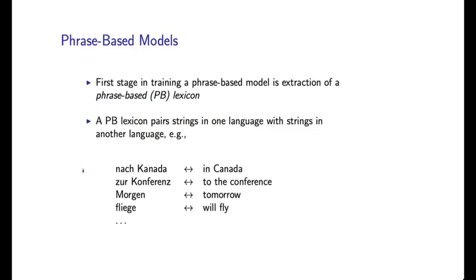The critical idea in phrase-based models is to automatically learn a very large lexicon from data where the lexicon consists of phrases in one language paired with phrases in another language. So here are some example phrases. On the left-hand side I have German, and on the right-hand side I have English. And each of these entries in the lexicon pairs some sequence of German words with some sequence of English words.